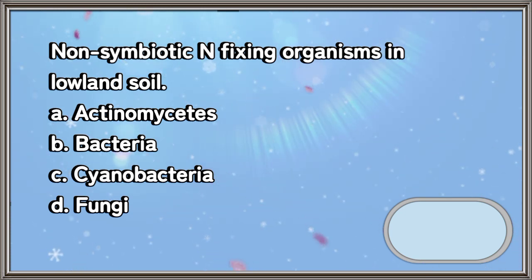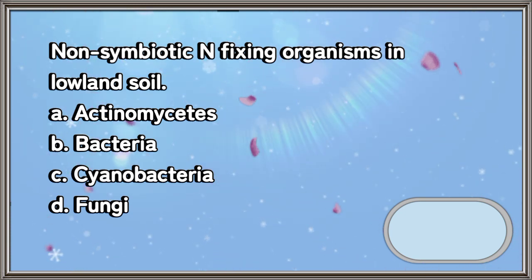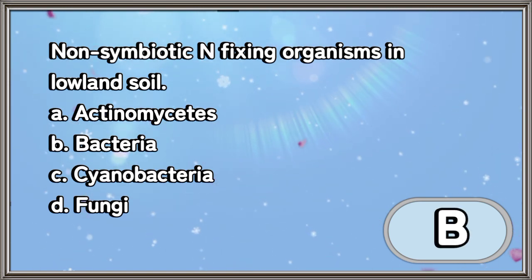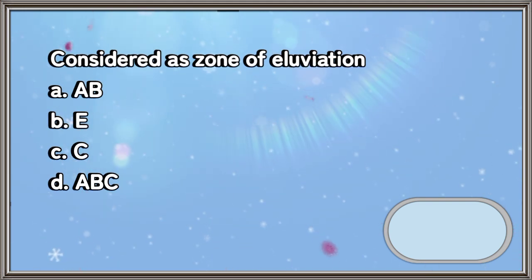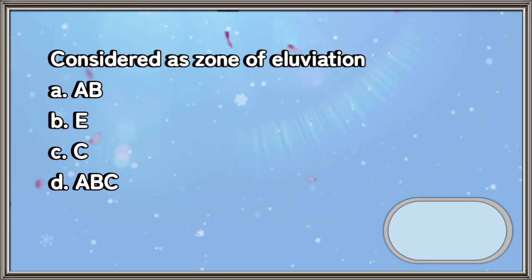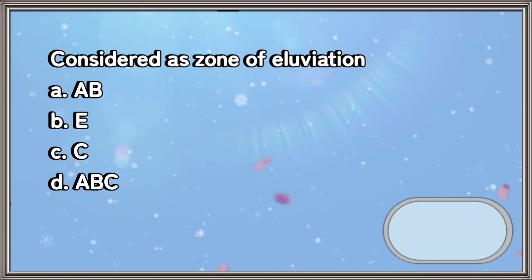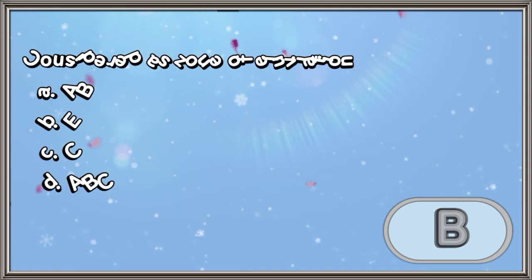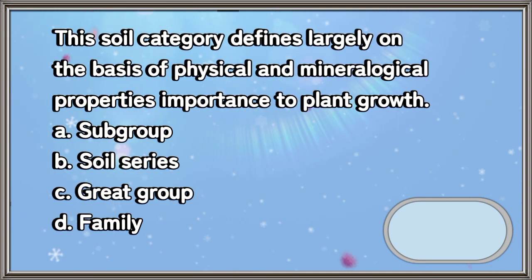Non-symbiotic nitrogen-fixing organisms in lowland soil: a) actinomycetes, b) bacteria, c) cyanobacteria, d) fungi. The answer is letter B. Considered as zone of alluviation: a) A horizon, b) B horizon, c) C horizon, d) A-B-C. The answer is letter B.